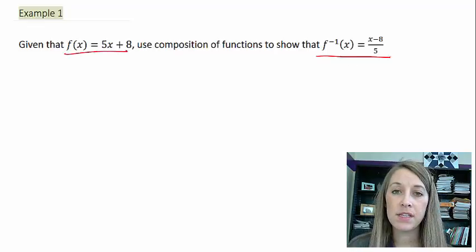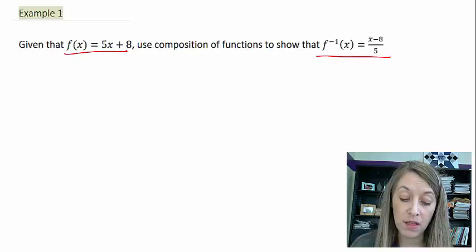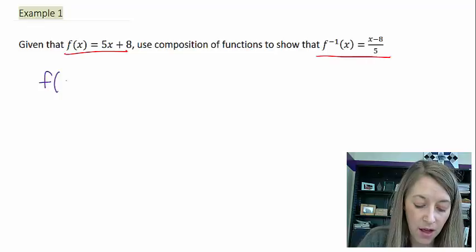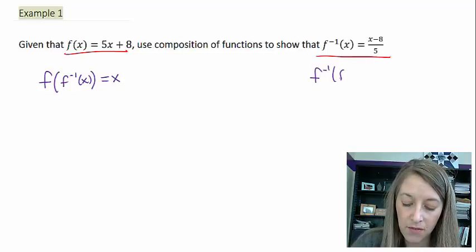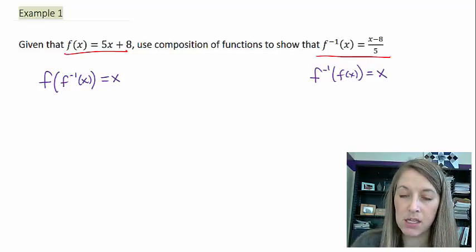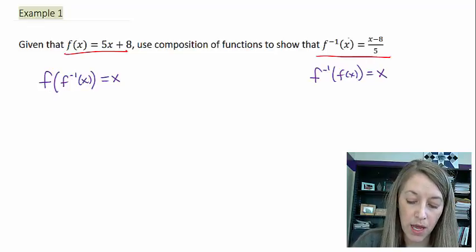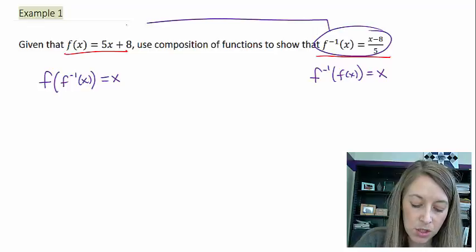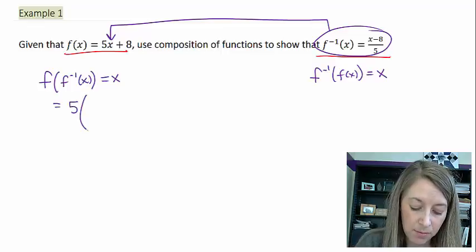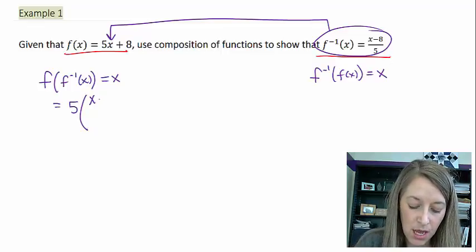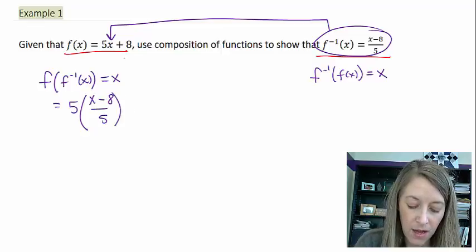So they give us f of x and they give us f inverse of x and we want to prove that they are in fact inverses. Okay, so what we need to do is we need to take f of f inverse of x, show that that is equivalent to x, and f inverse of f of x, and show that that is equivalent to x. So the first one, I take my inverse function and I substitute it into x for all of the x's. So this gives me 5 times, instead of x, I type in my inverse function, x minus 8 over 5, add 8.